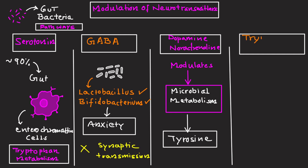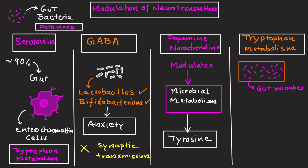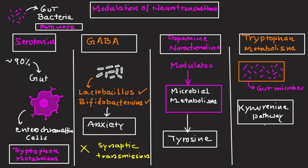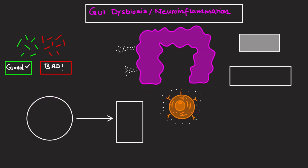Tryptophan metabolism: gut microbiota regulate the kynurenine pathway, influencing neuroinflammation and psychiatric vulnerability. Gut bacteria regulate the synthesis of key neurotransmitters like serotonin, GABA, and dopamine, impacting brain activity.